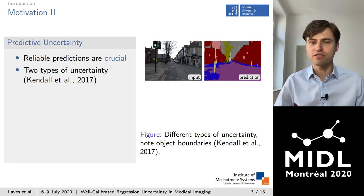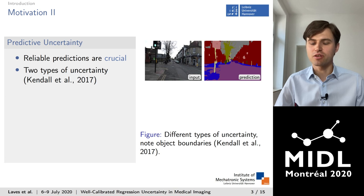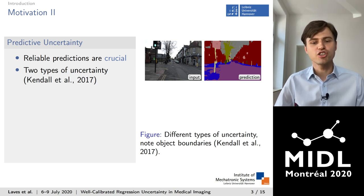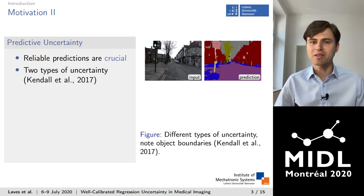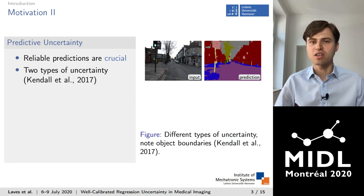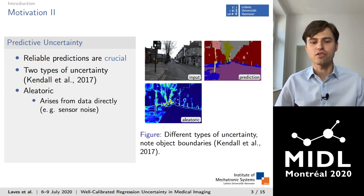For reliable predictions, which are necessary in all safety-critical applications of deep learning, more important than absolute accuracy is that we recognize uncertain predictions and, if necessary, reject them. In general, we can distinguish between two types of uncertainty: aleatoric and epistemic uncertainty. I would like to explain this using the example of the segmentation of a street scene.